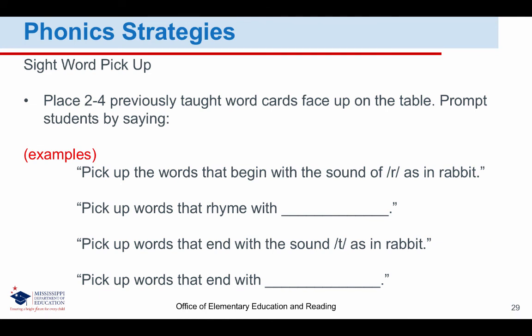Sight Word Pickup: place two to four previously taught word cards face up on the table, and prompt students by saying things such as: pick up the words that begin with the vowel sound /r/ as in rabbit; pick up words that rhyme with blank; pick up words that end with the /t/ sound as in rabbit; pick up words that end with blank. After students can successfully locate the correct word, switch roles and let the student be the teacher, directing which cards should be picked up. This activity will help English learners learn English sounds that may be different from those of their first language, as well as providing a low-risk opportunity to practice specific skills previously taught.